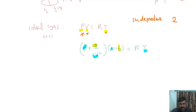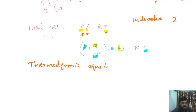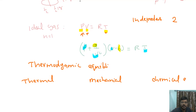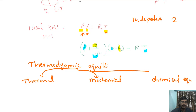The next point is thermodynamic equilibrium. There are three types: thermal equilibrium, mechanical equilibrium, and chemical equilibrium. If a system possesses all three — thermal, mechanical, and chemical equilibrium — then that system is said to be in thermodynamic equilibrium. So thermodynamic equilibrium means there will be thermal, mechanical, and chemical equilibrium simultaneously.